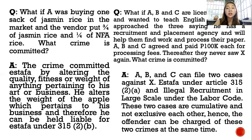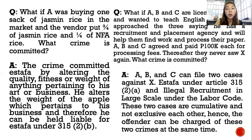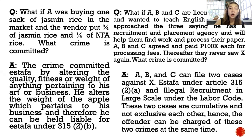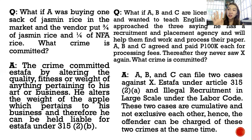The other crime committed by X is illegal recruitment in large scale. If illegal recruitment is committed against three or more persons individually or as a whole, it is considered illegal recruitment in large scale. If it is committed by five or more persons, it is considered syndicated illegal recruitment. Both crimes — illegal recruitment in large scale and syndicated illegal recruitment — are considered crimes involving economic sabotage under the Labor Code, which is why they are non-bailable offenses.